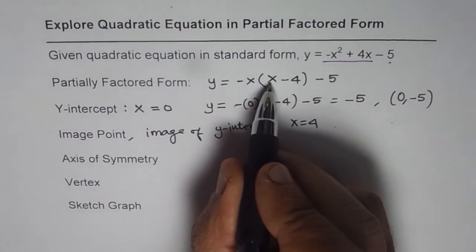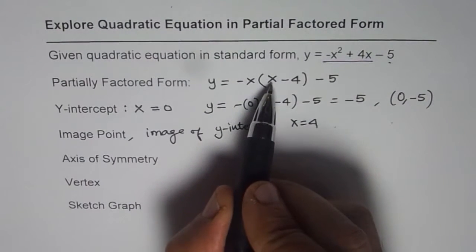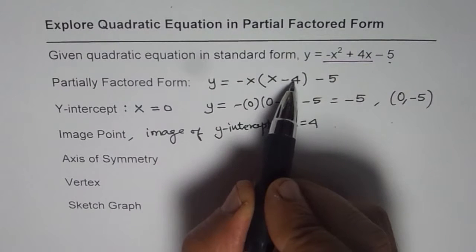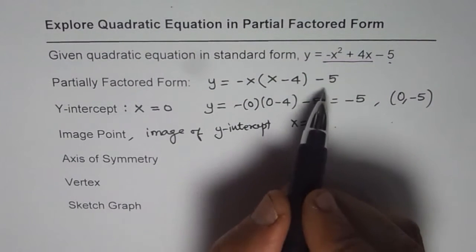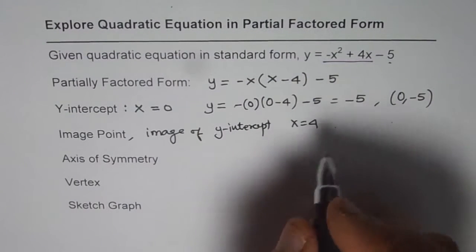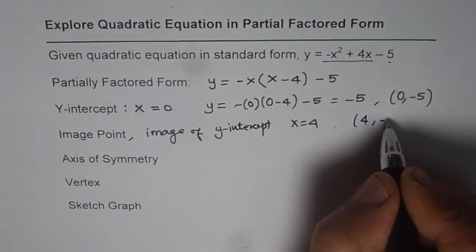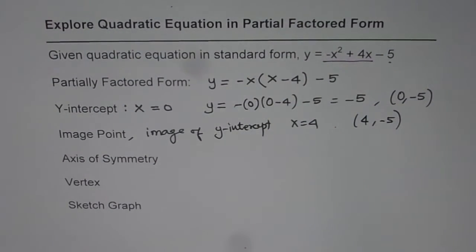If I substitute x equals 4 in my partially factored form, I get 4 minus 4 as 0. And so that point will be the image of y-intercept. So the point will be 4 minus 5. That is the image point.